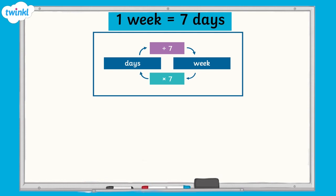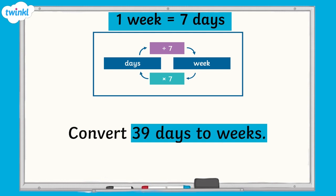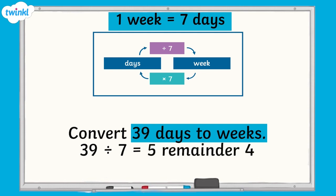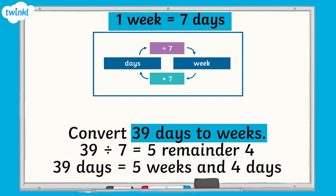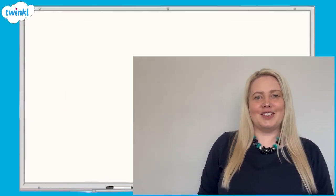To calculate how many weeks there are in a number of days, divide the number of days by 7. If there is a remainder, this becomes days. For example, to convert 39 days to weeks, we divide 39 by 7, which equals 5 remainder 4. 39 days equals 5 weeks and 4 days.